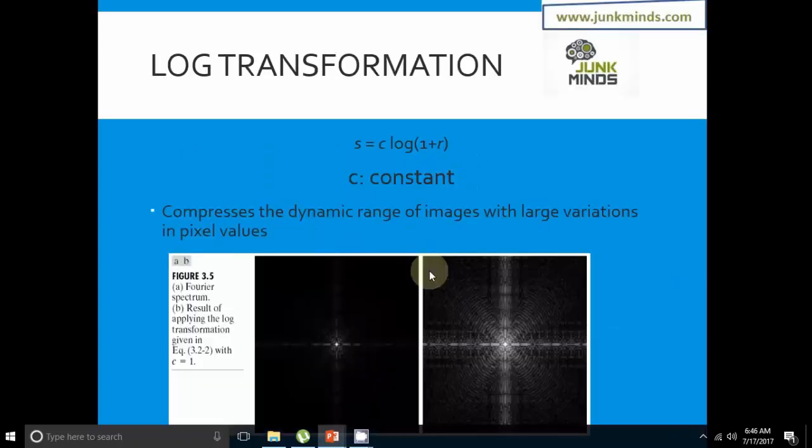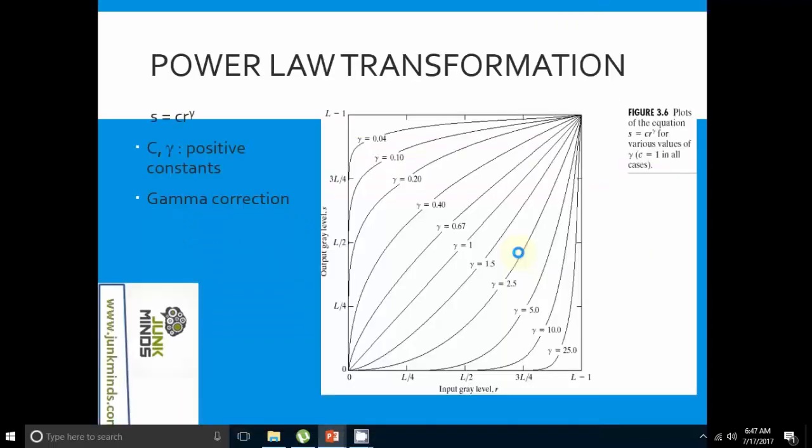Log transformation is given by the formula S = C·log(1+R), where C is a constant and R ≥ 0. The log curve maps a narrow range of gray level values in the input image into a wide range of output levels. It is used to expand the value of dark pixels while compressing the higher level values.